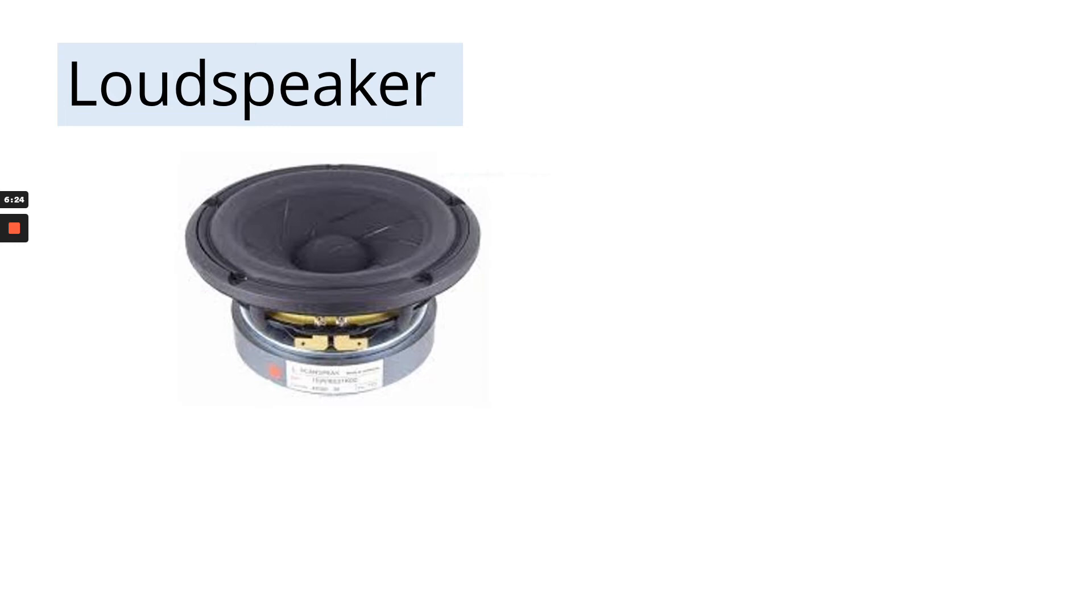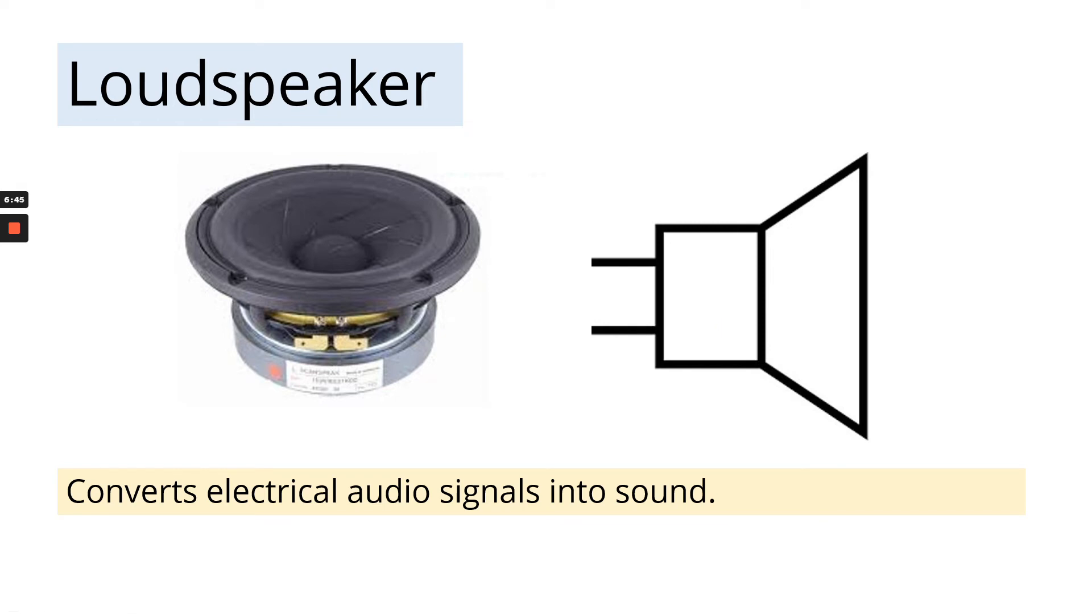The next component is a loudspeaker. So this is the component symbol for a loudspeaker. Notice that the two wires are both on the left-hand side. The description for a loudspeaker is that it converts electrical audio signals into sound. So it takes the signals from a microchip and it converts it into the sound that we hear when we play music on our phones or on the radio.